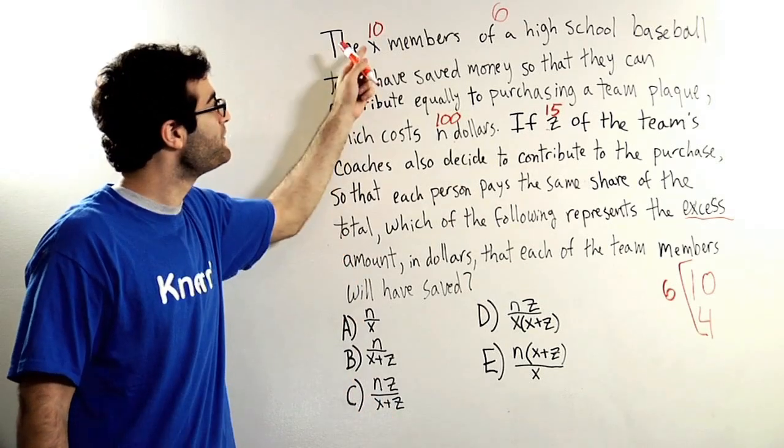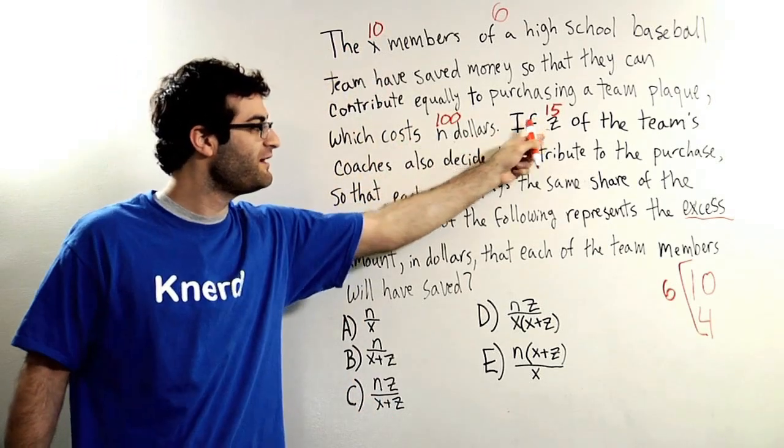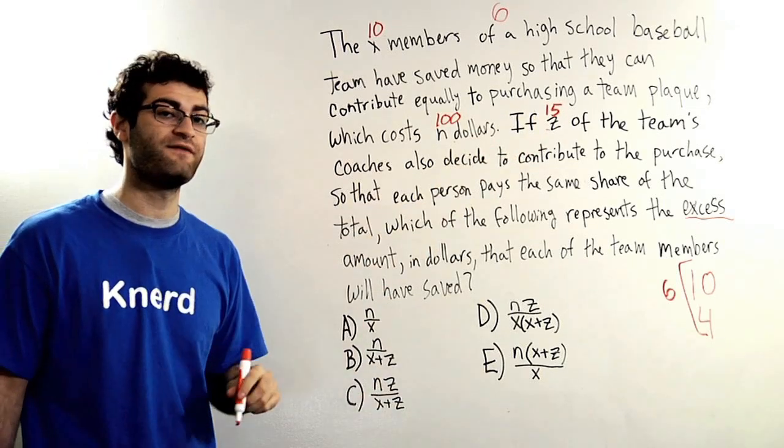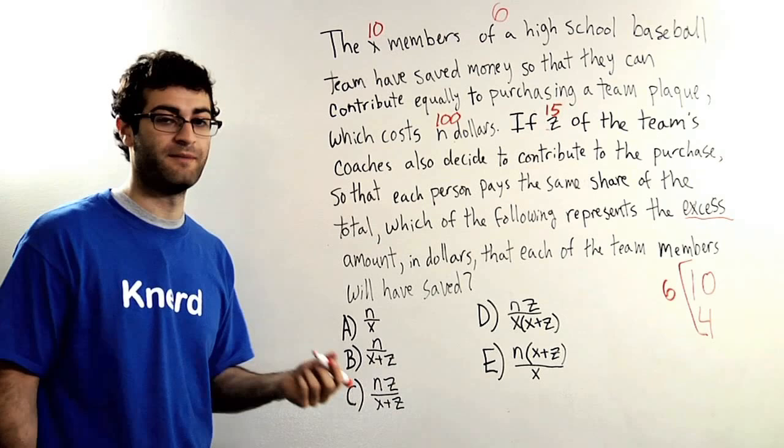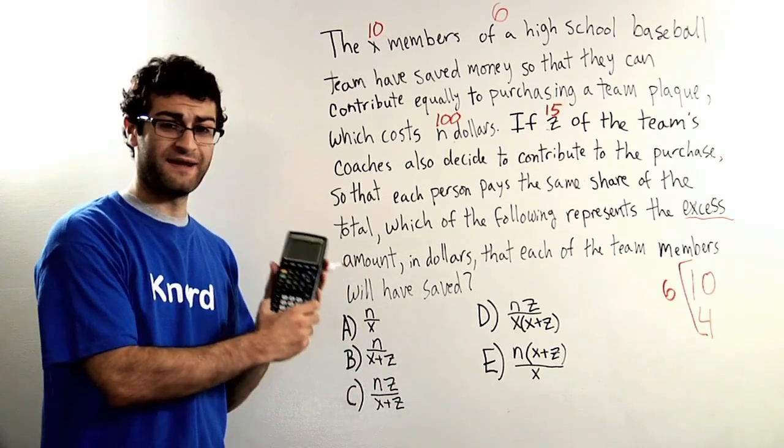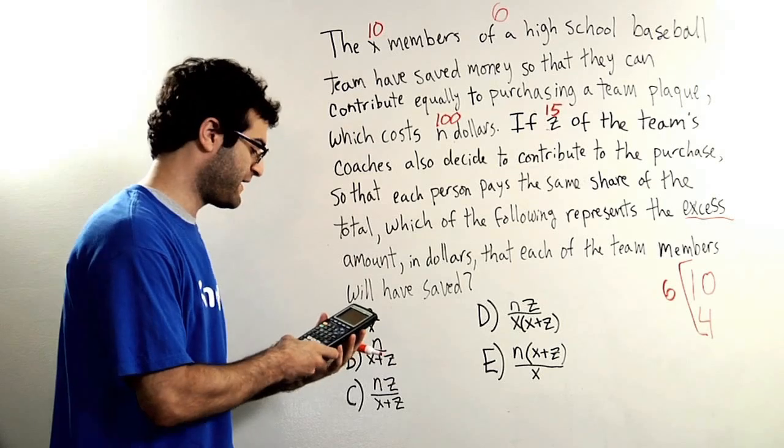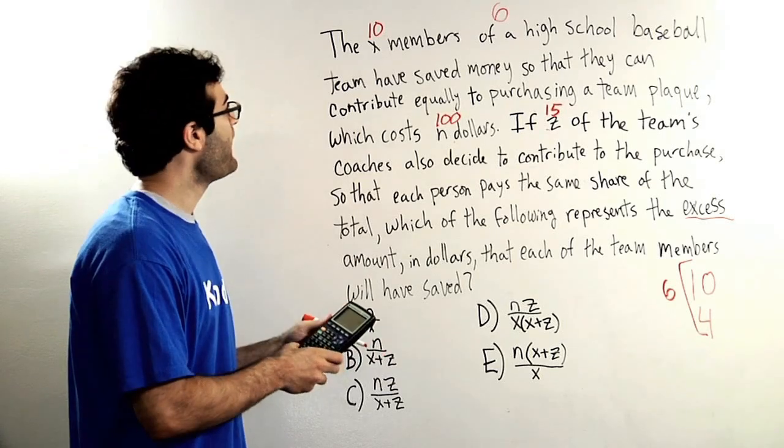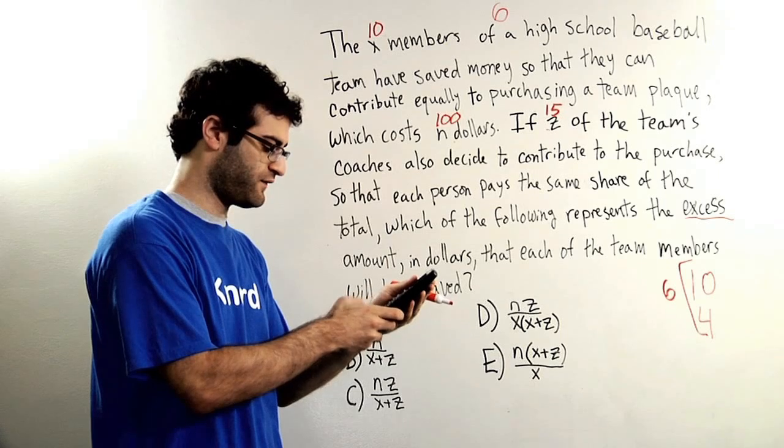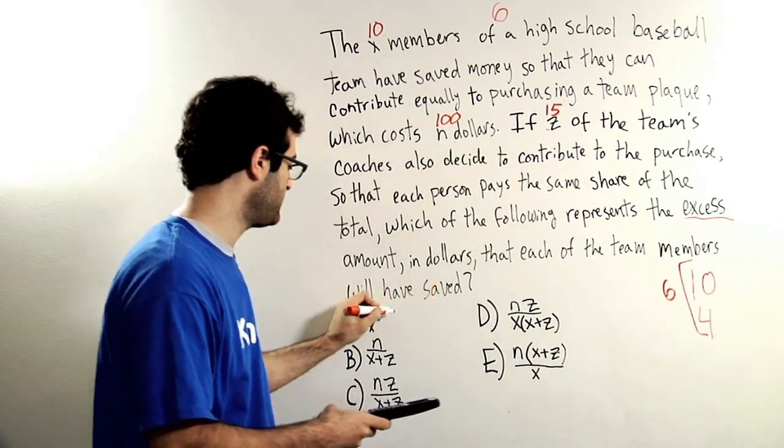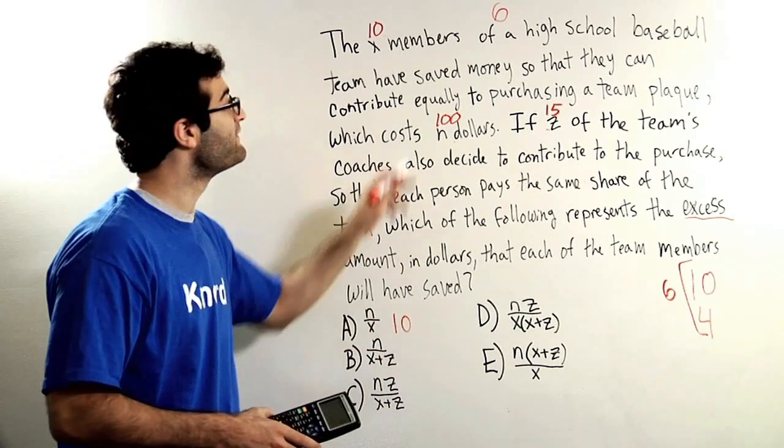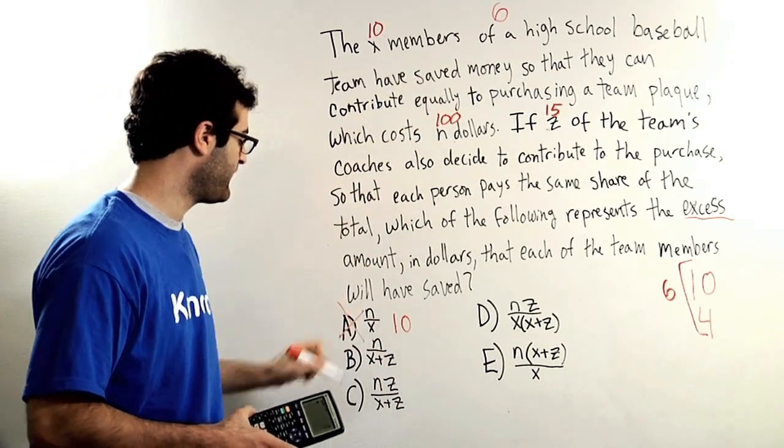Now my last step, I'm going to plug x, n, and z into the answer choices where appropriate and hope that only one of my five answer choices will give me 6, my goal number. Let's start with answer choice A and I'm going to use my calculator which I always keep in my back pocket. n over x, that's going to be 100 over 10. 100 over 10 is equal to 10, could have done that in my head but might as well be safe. 10 is not my goal number of 6, goodbye answer choice A.